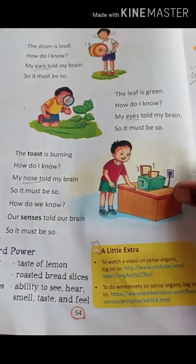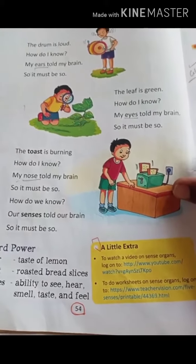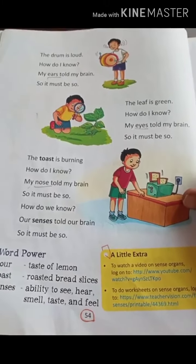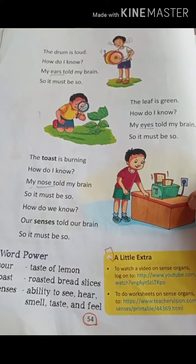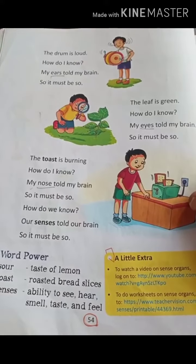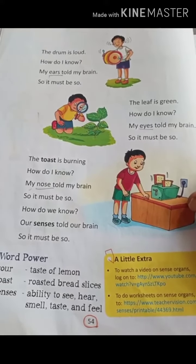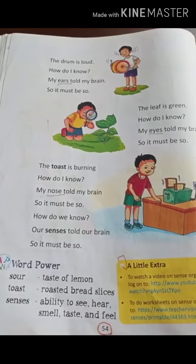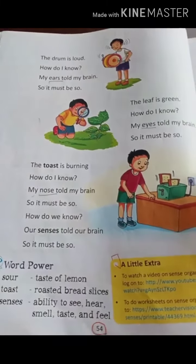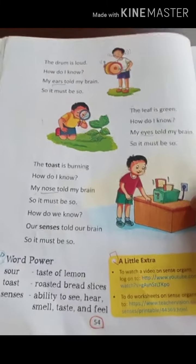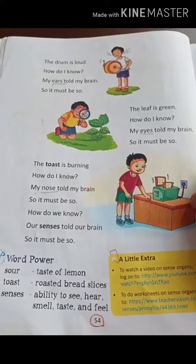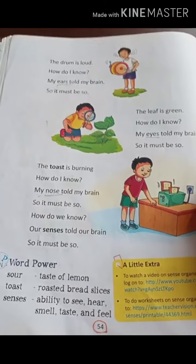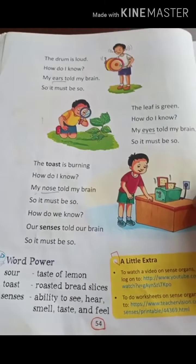The leaf is green. How do I know? My nose told my brain. So it must be so. What is toast? Toast means bread. So bread is burning. How do you know? By your nose. My nose told my brain. So it must be so.